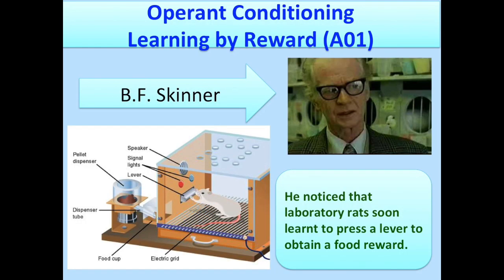Behaviourists believe all behaviour, including attachment, is learned through classical and/or operant conditioning. Operant conditioning means learning by reward, and your main theorist for this is Skinner. Skinner performed experiments using animals like rats and pigeons. When he put a rat inside a Skinner box, the rat would accidentally hit a lever and food would appear. Because the rats were rewarded with food, they quickly learned to press the lever over and over again. This is called learning by reward, and the food acted as positive reinforcement.